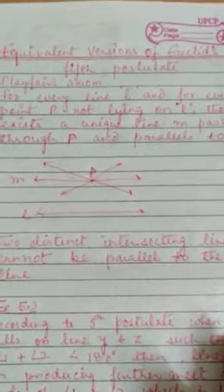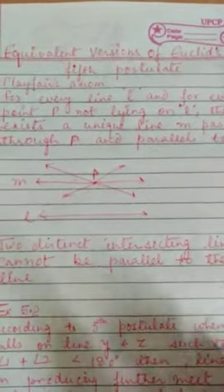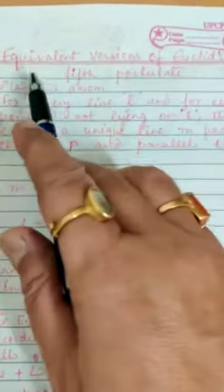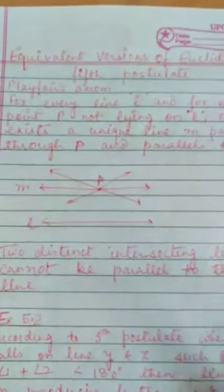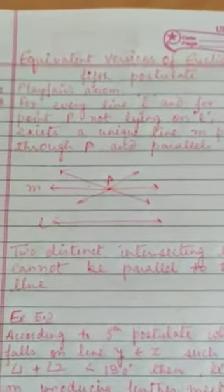These are given by Euclid. Now Euclid's fifth postulate had equivalent versions. Equivalent versions means that someone else has stated it, but in other words.